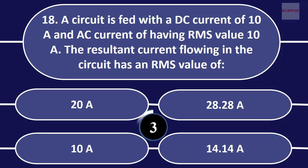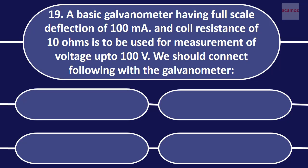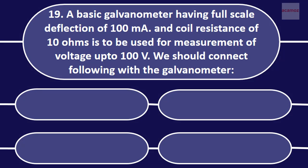A basic galvanometer having full scale deflection of 100 mA and coil resistance of 10 ohm is to be used for measurement of voltage of 200 volt. We should connect 990 ohm in series with the galvanometer.